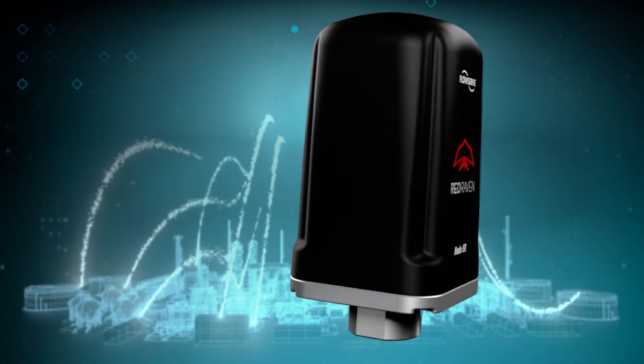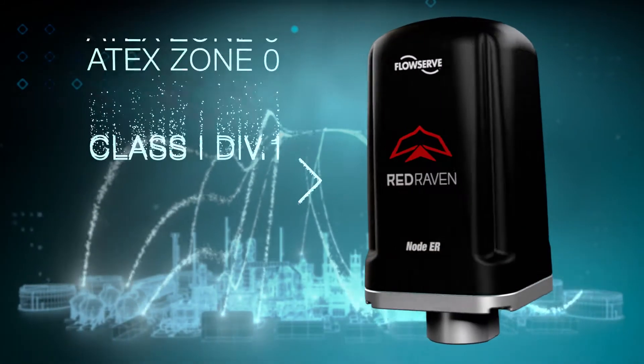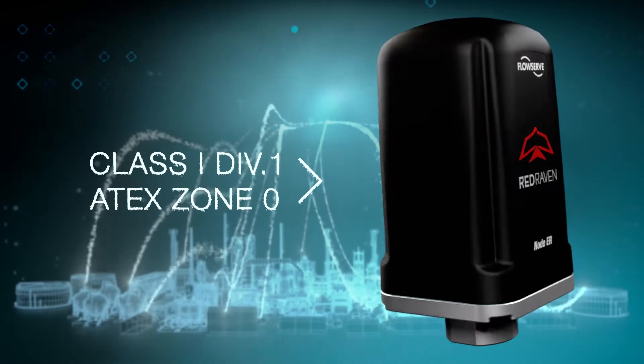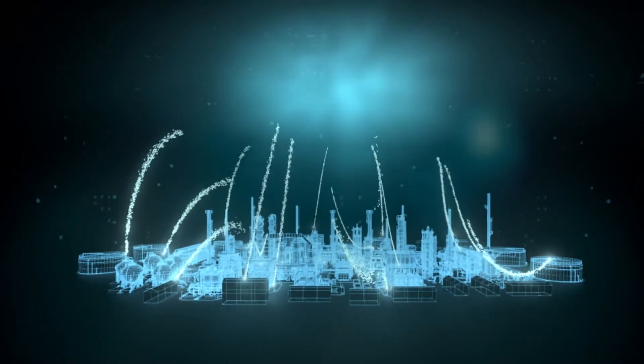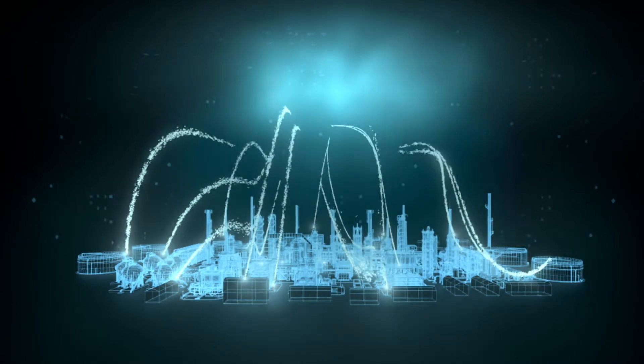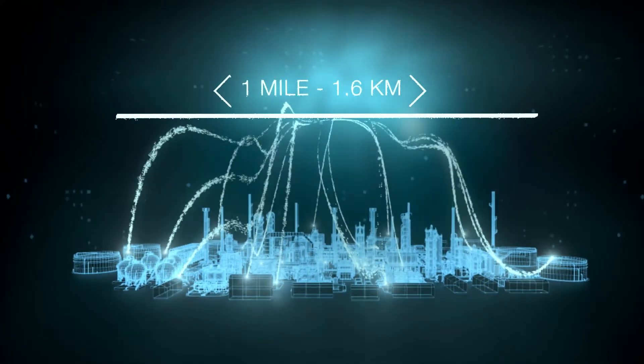Node ER, the first LoRaWAN sensor certified for Class 1 Division 1 ATEC Zone 0 areas, balances volume and distance demands. Node ER sensors reliably transmit data as far as one mile over industrial areas.